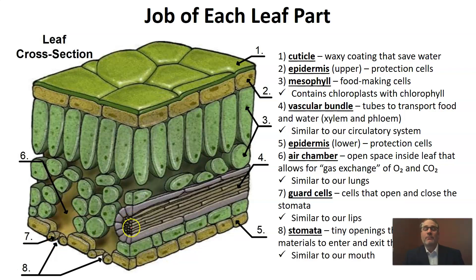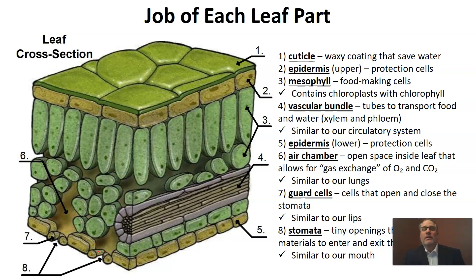Our stomata is that tiny opening or pore — it's great to think of it like a little mouth on the bottom of the leaf, and actually 'stoma' means mouth. These tiny openings allow things to enter and exit. Carbon dioxide and oxygen needed for photosynthesis pass through them, and we also discussed transpiration — water evaporates from the leaves through these tiny pores. Controlling the stomata are the guard cells on either side, which act like lips, allowing the leaves to open or close these openings depending on what's going on in their environment.